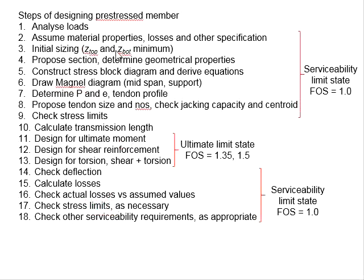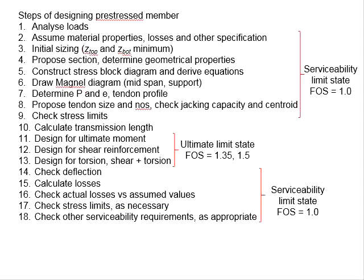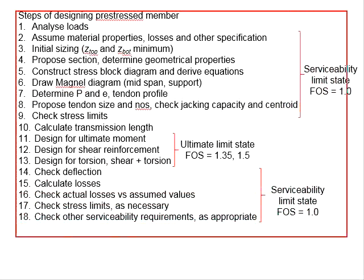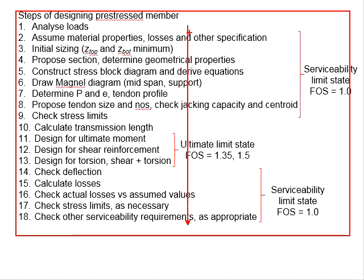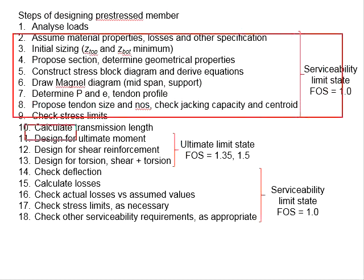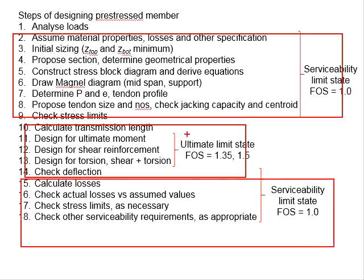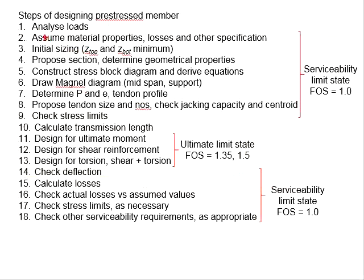Lastly, you might need to check for other serviceability requirements as appropriate, such as concrete cover, side surface reinforcement bars, minimum and maximum spacing of reinforcement bars, and others. The design and analysis of a pre-stressed member is long and tedious. It is essentially made of three main parts: the serviceability limit state, the ultimate limit state, and the serviceability limit state for losses. For a pre-stressed member to pass, you need to ensure all aspects of design are satisfied. Failure in any aspect may lead to failure of the member.